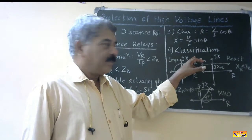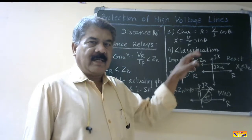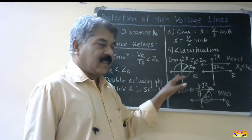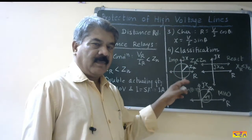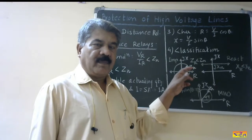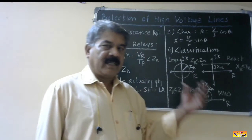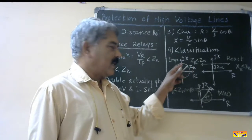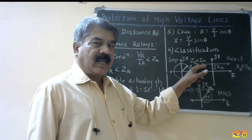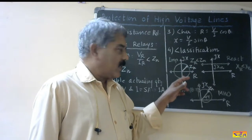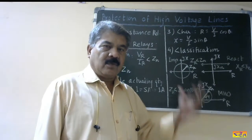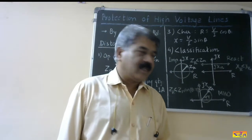Then the classification of distance relays: distance relays are classified according to their characteristic in the R-X diagram, and we get three conventional characteristics. The first is the impedance relay. The characteristic of the impedance relay is a circle having its center at the origin and its radius equal to the impedance setting of the relay, Zn. The operating condition is Zr should be less than Zn. All the impedance vectors whose tip lies inside this circle will operate the relay, so inside this circle is the positive torque region or operating region.